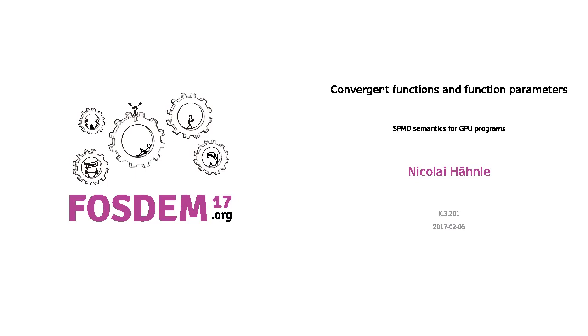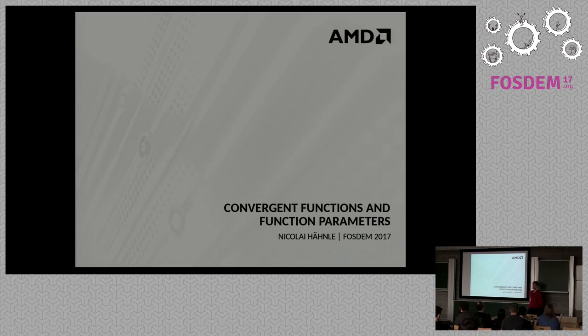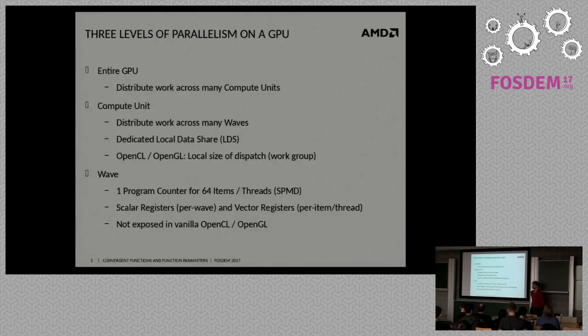My name is Nikolai. I work at AMD on our open source OpenGL driver where we are using LLVM as the back end for shader compilation. I want to just very briefly go over some unusual semantics that we need to model in LLVM IR due to the way parallelism works in GPUs. So just kind of as a reminder, how does it work?